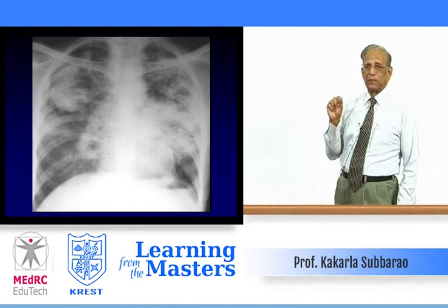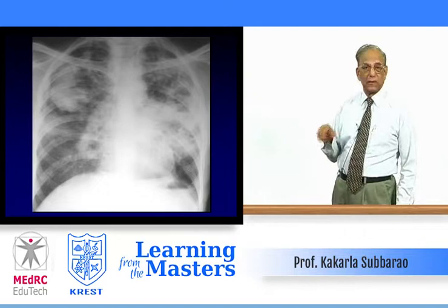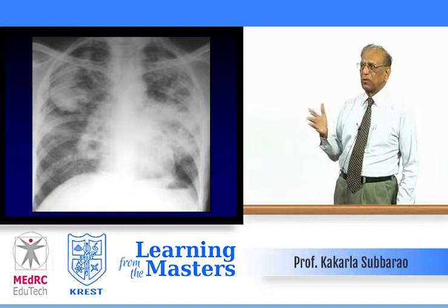The first thing we do is take a conventional radiograph of the chest. While observing the important points, don't go to the diagnosis immediately, although a classical diagnosis may strike you. Observe the findings: there are bilateral, patchy, homogenous opacities scattered in both lungs. Regarding the pleura, there is no pleural reaction.